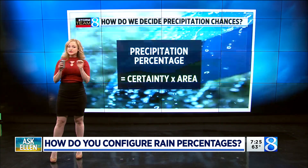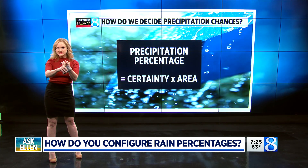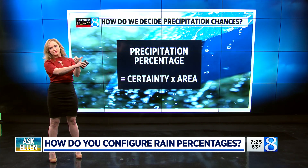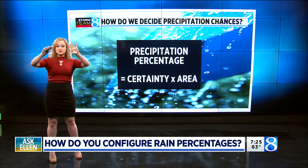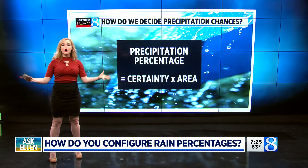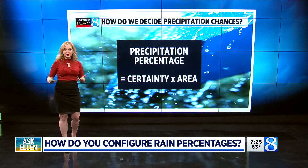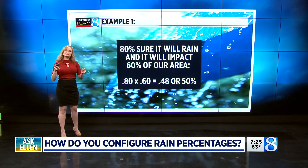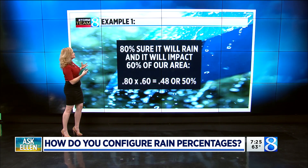Well, it's really easy. It's a short formula, and it's certainty — how certain we are that showers are going to form — and an area. So for us, it's all of West Michigan that we're forecasting for. And if we start using examples, you can see how this comes into play.